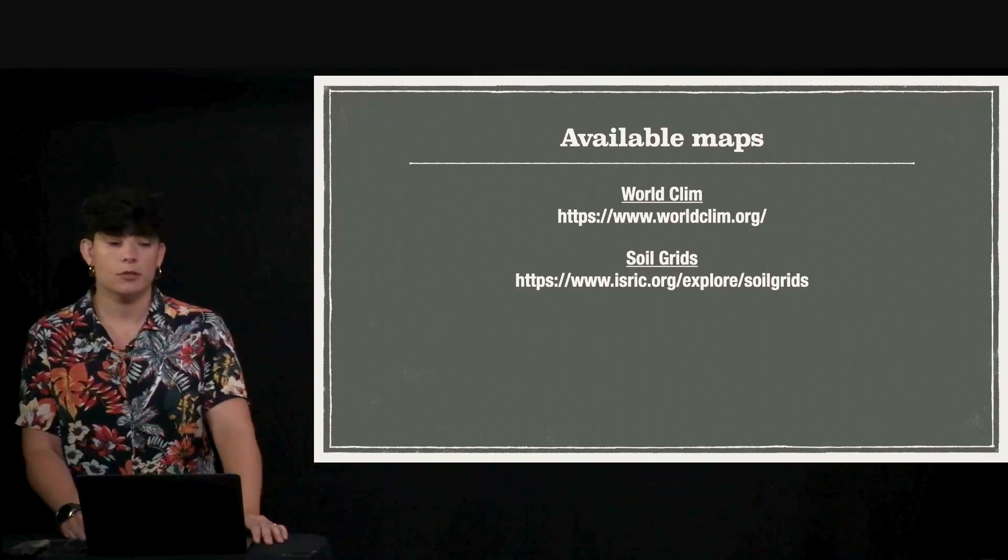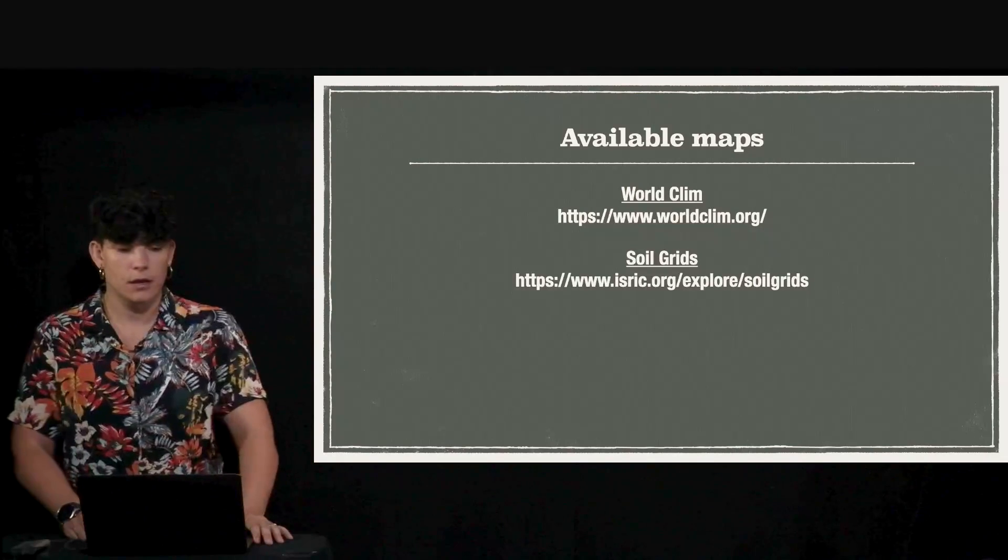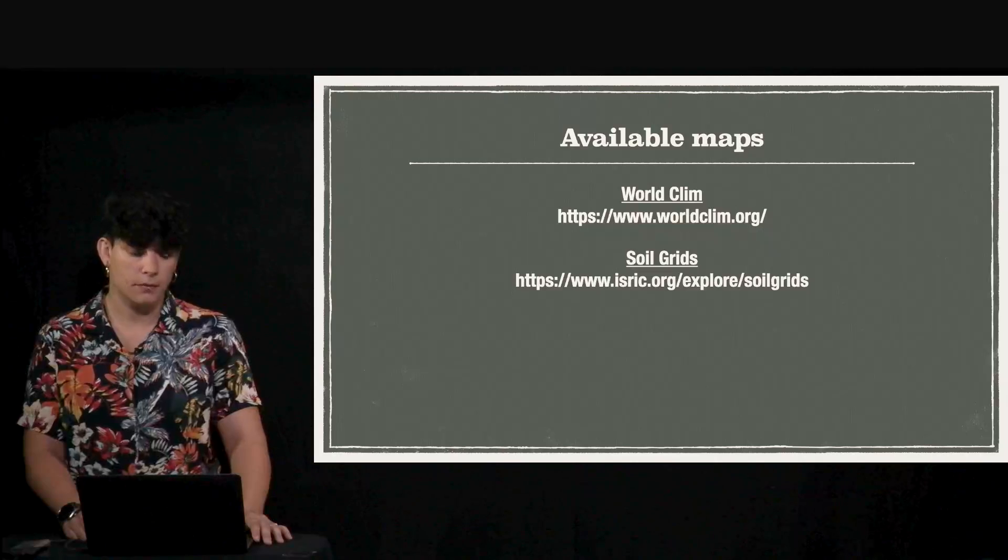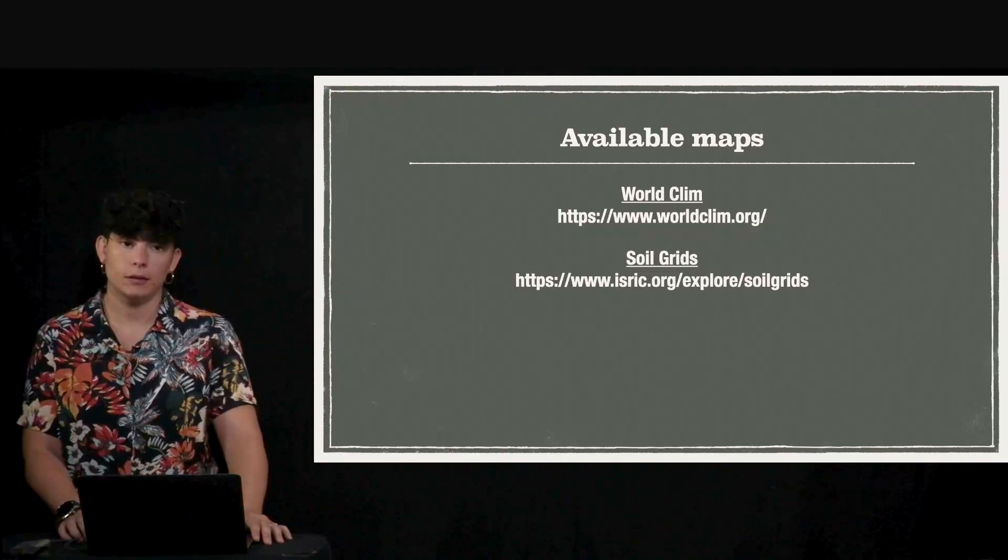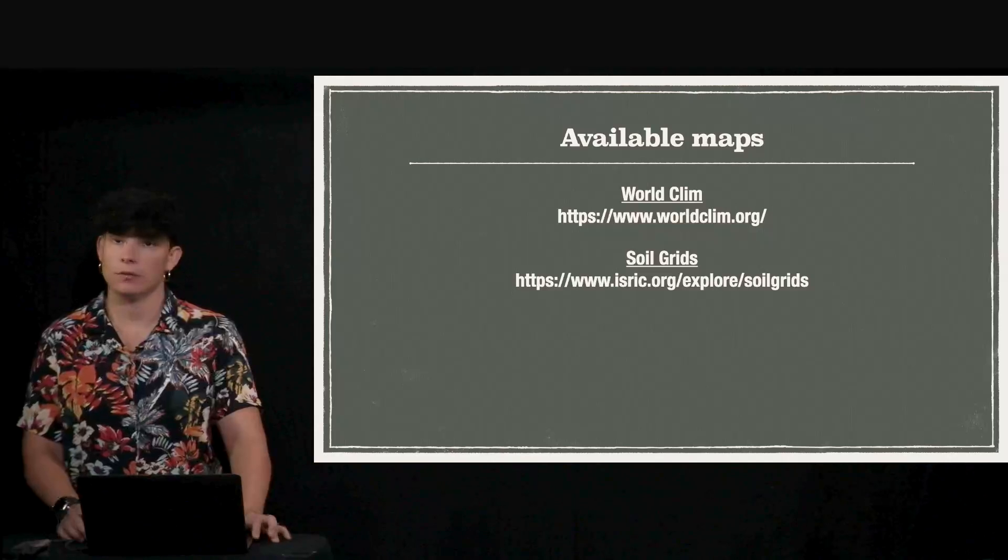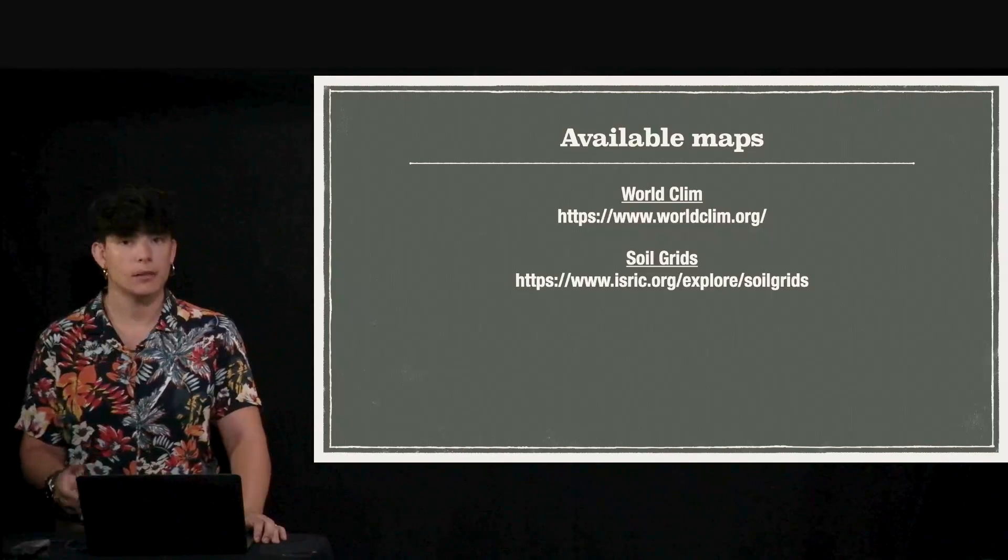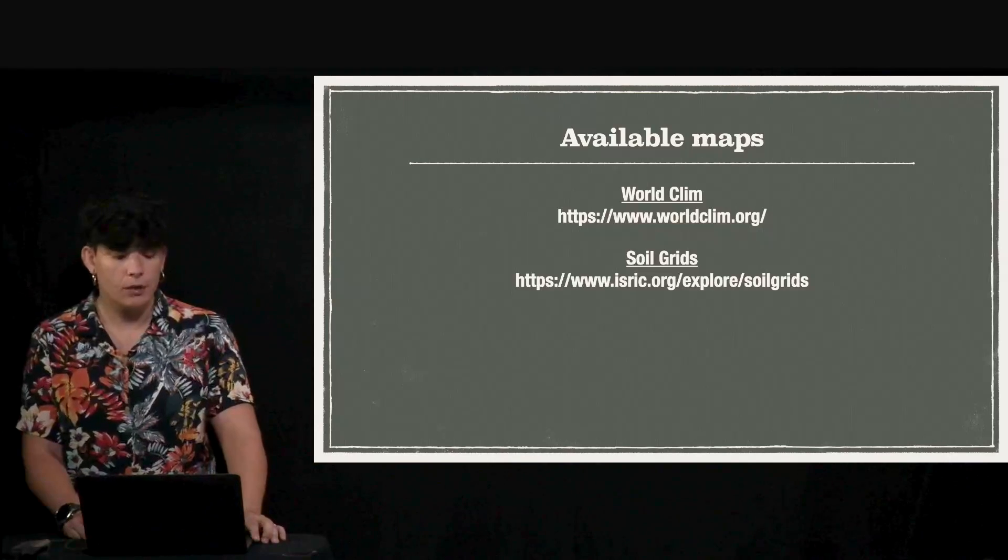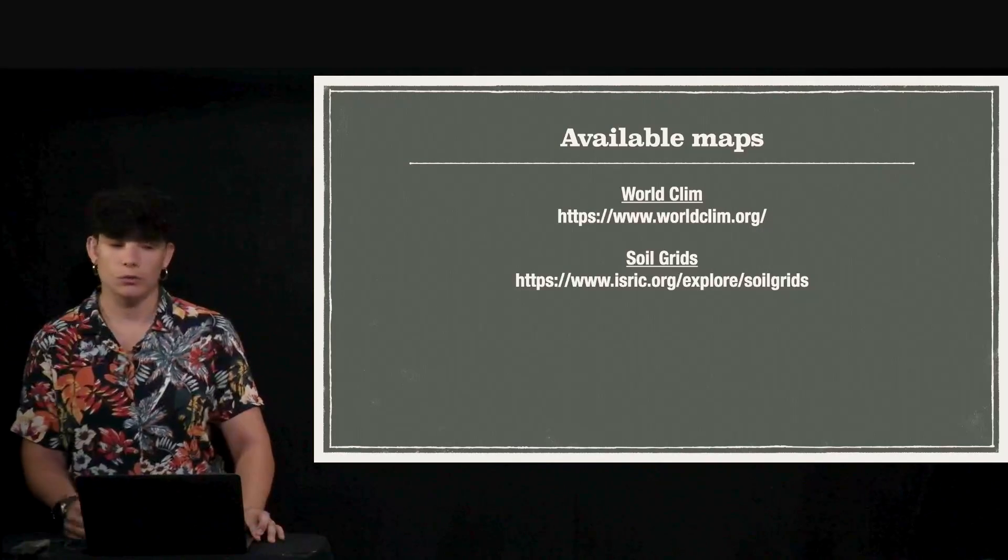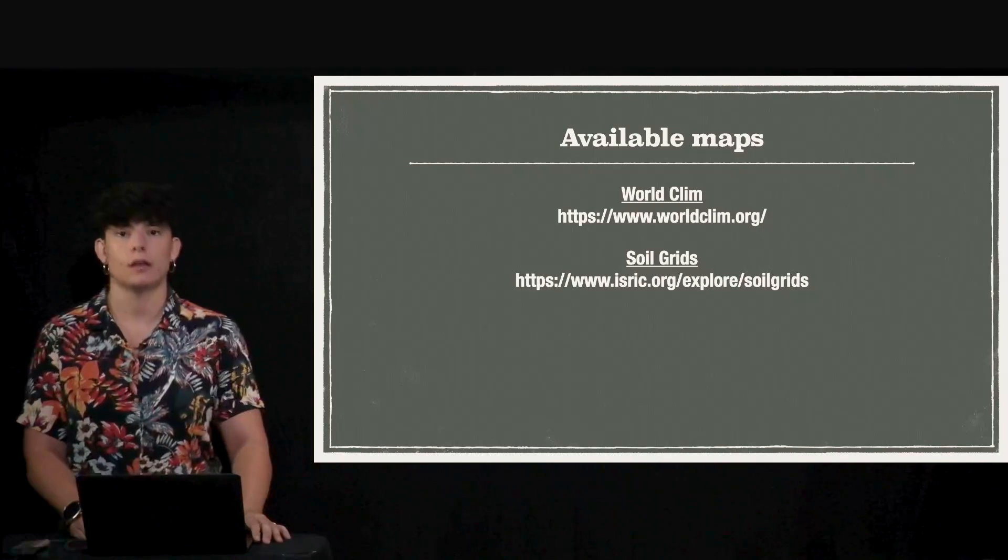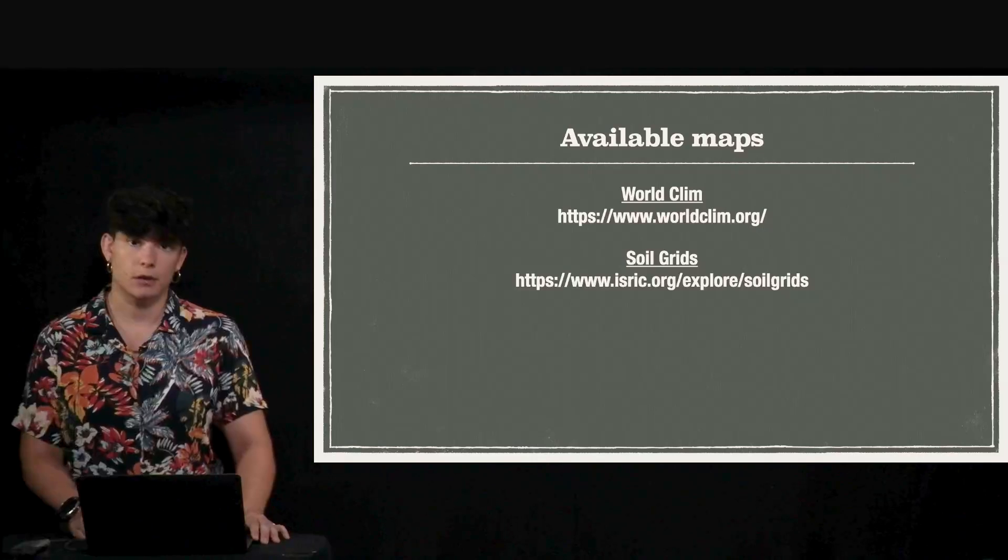And also here, just some resources. You can find raster maps, the first one is WorldClim, where you can find environmental variables such as those related to climate, precipitation, temperature, and so forth. And then if you are interested in obtaining information from soils, you might go to SoilGrids where they have a lot of physical and chemical properties of different soils.